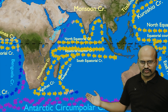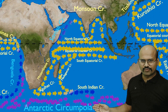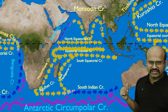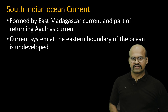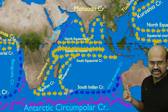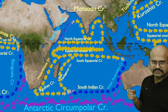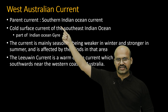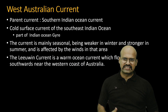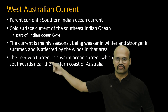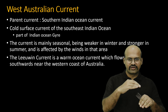When the Agulhas return current and East Madagascar current combine and move eastward, they convert into a cold ocean current due to the ambient cold temperature and the Antarctic Circumpolar current, flowing as the South Indian current towards the Australian boundary. When this South Indian current reaches the Australian region it moves along the western boundary of the Australian continent, where it is called the West Australian current. There is also a warm current called the Leeuwin current which flows southward near the western coast of Australia.